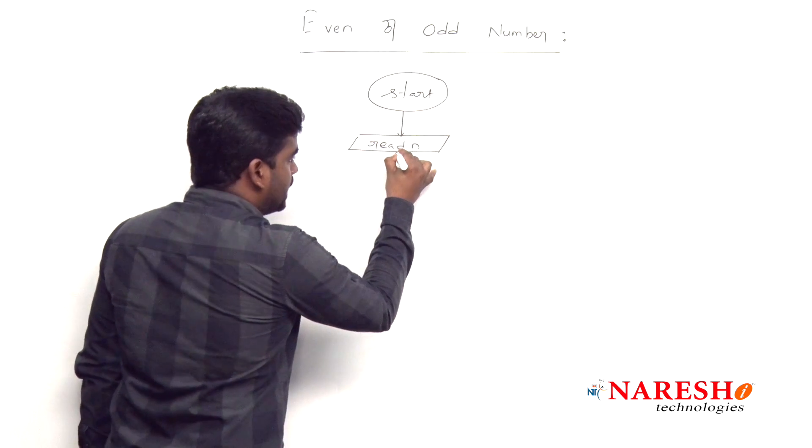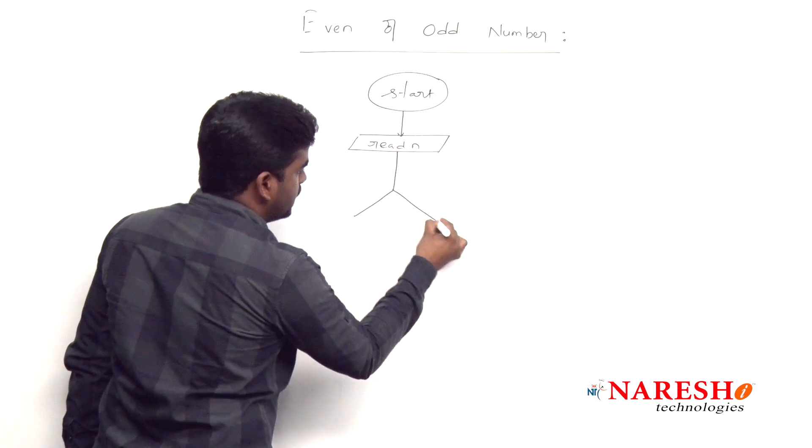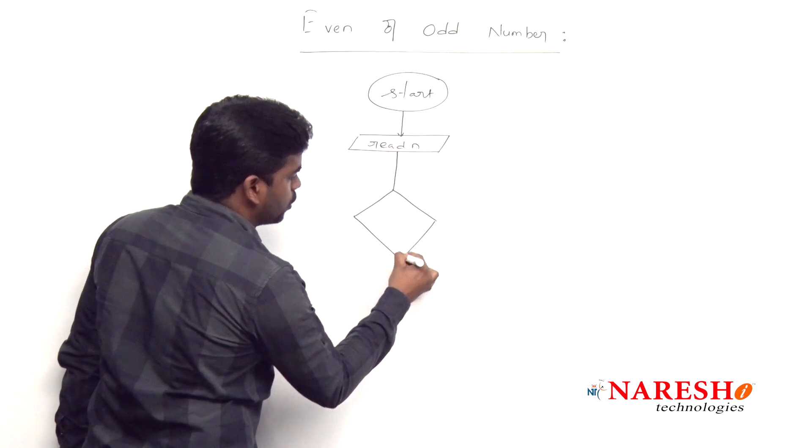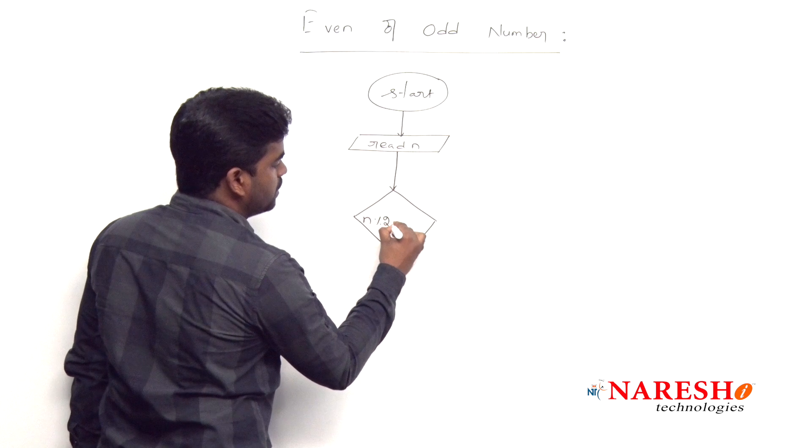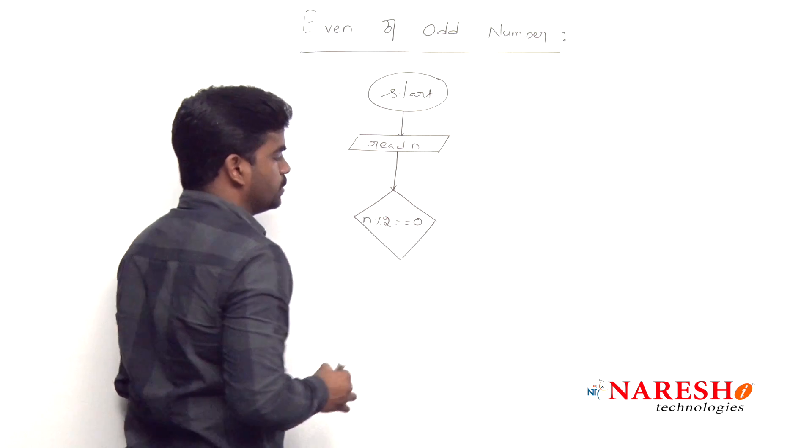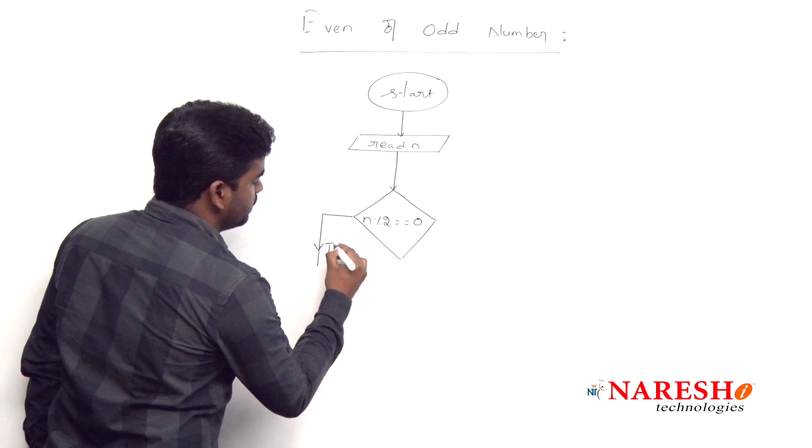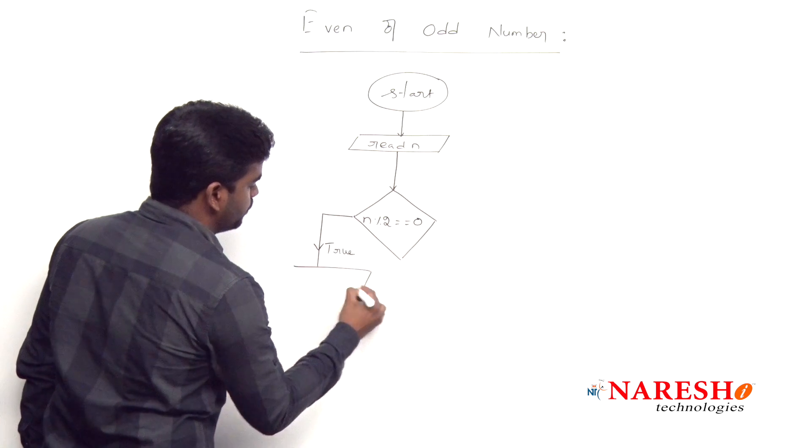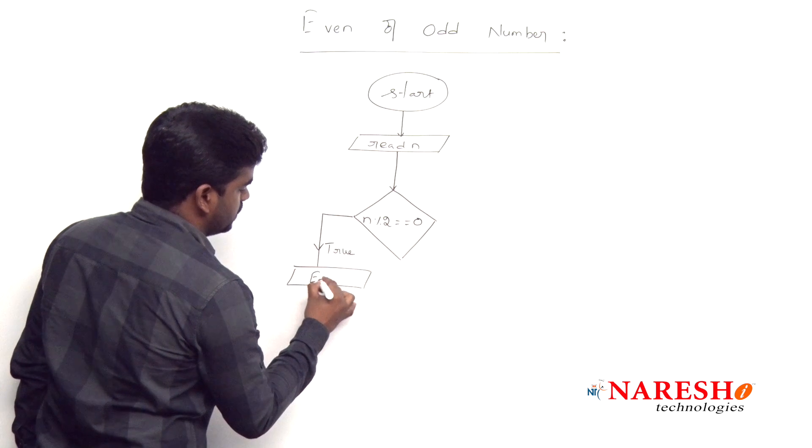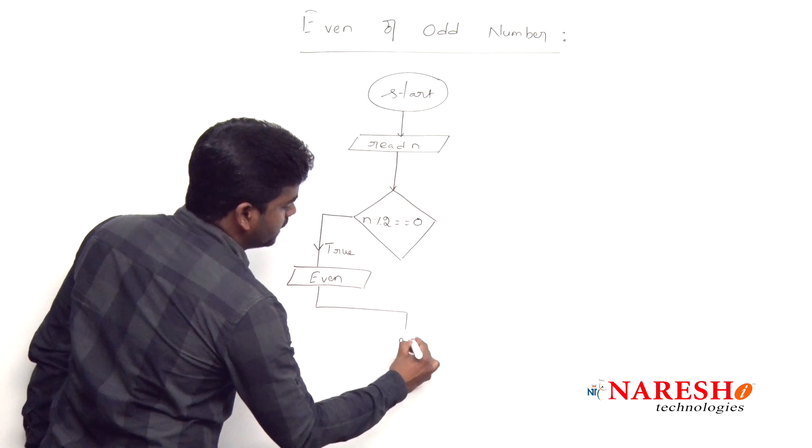And now checking that condition, if n value is divisible by 2 or not, if n is divisible by 2 equal to 0. Then this is called even number - if true, display it is even, then come to end.